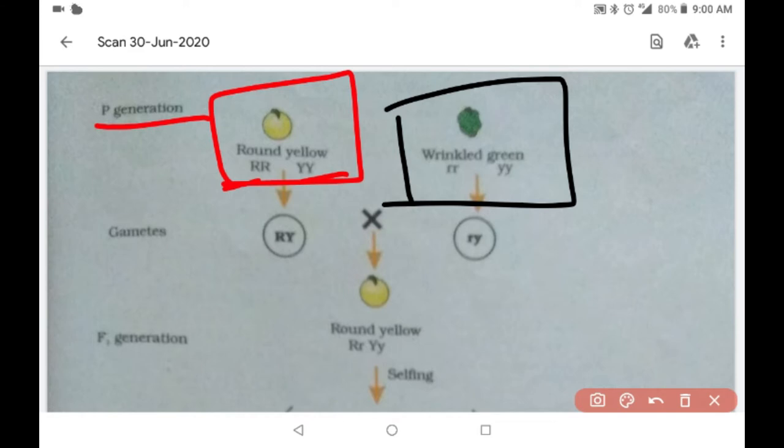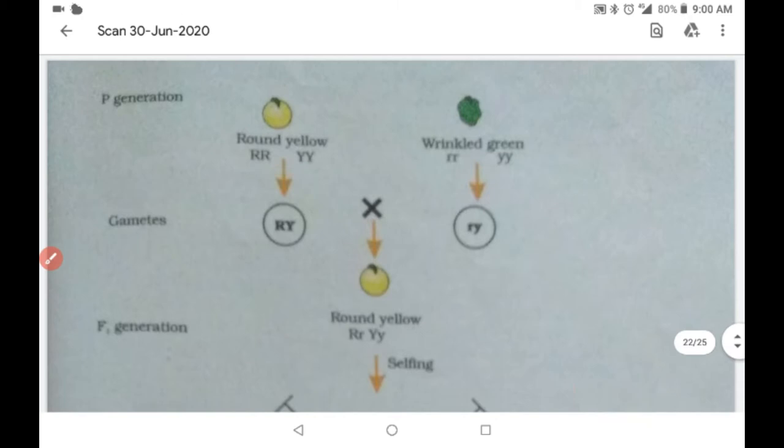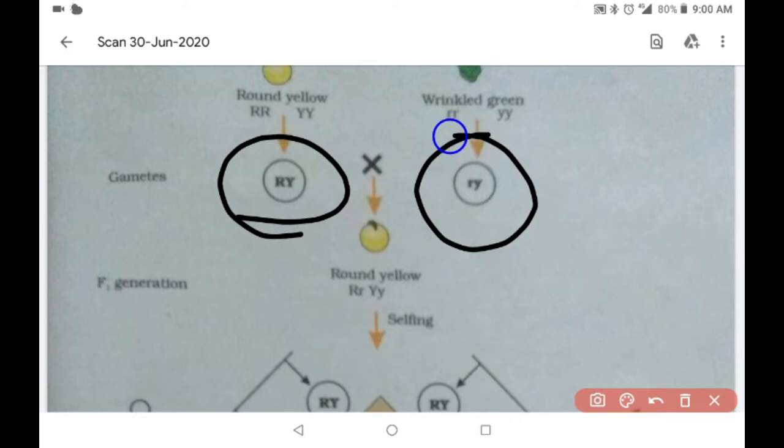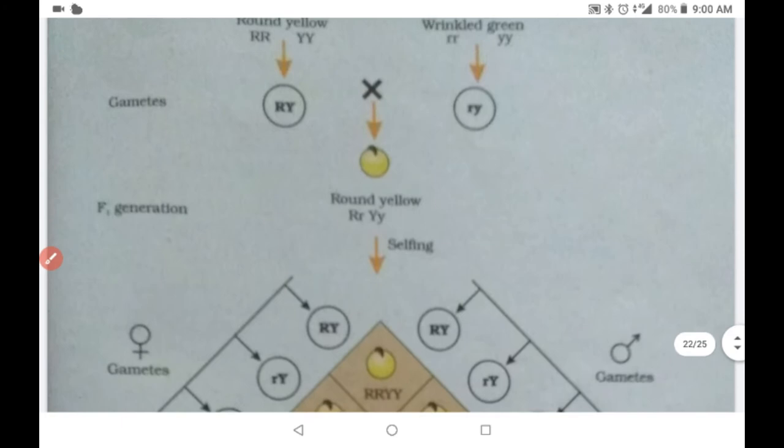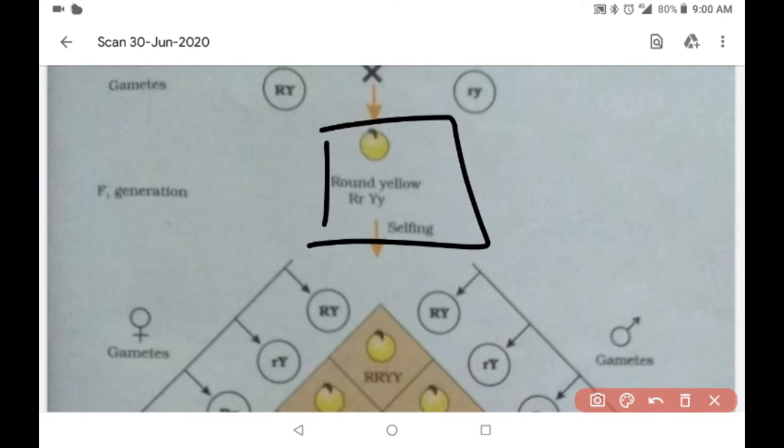When they form gametes, there are only two types of gametes that can be formed from each of them. Capital R capital Y, both dominant. Small r small y, both recessive. When we cross these, only one type of offspring can be produced in which each gene has one dominant and one recessive allele. But as you know, because this is the case of dominance, we see the phenotype. So it has the phenotype of round yellow. But when we self,